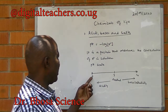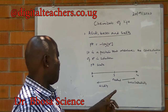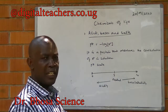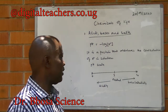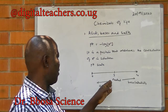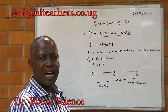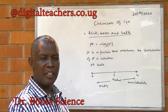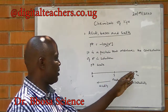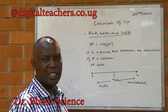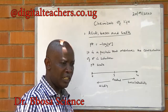The pH scale ranges from 0 to 14. pH 7 indicates a neutral solution. From pH 7 towards 0, acidity increases. From pH 7 to pH 14, alkalinity increases.